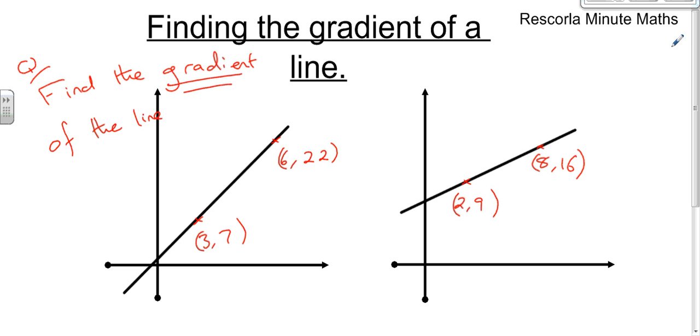So as soon as it says find the gradient, what you need to do is see between the two points you're looking at how far it's gone up. So it's the change in height divided by the change horizontally.